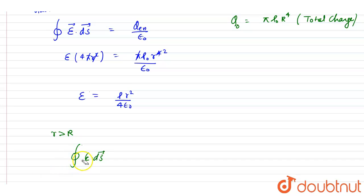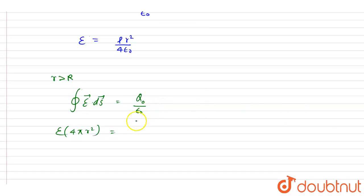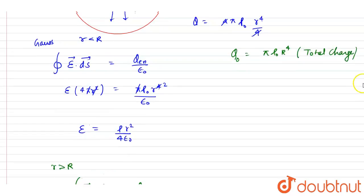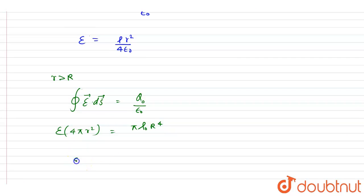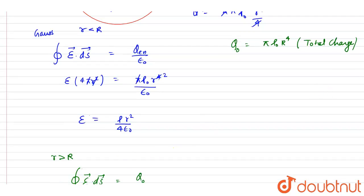Applying Gauss's law again for the exterior point, by symmetry the electric field is radially outward, and the charge enclosed is Q naught divided by epsilon naught. Writing 4 pi r squared for the Gaussian surface area and substituting the fixed total charge, after cancellation of pi, the electric field outside is E equals rho naught R to the power 4 divided by 4 epsilon naught r squared.